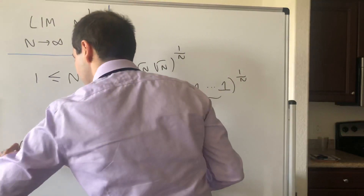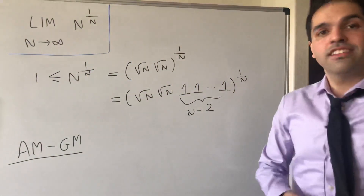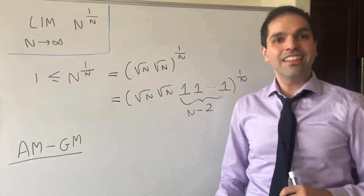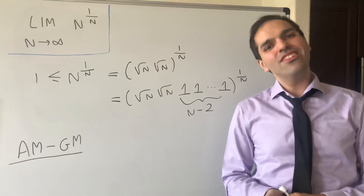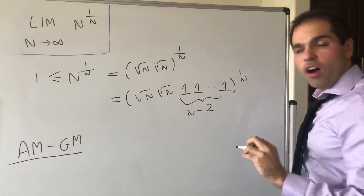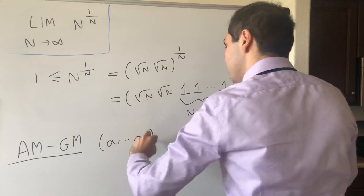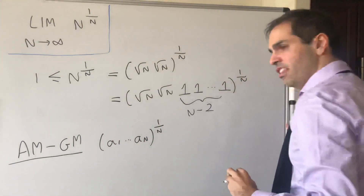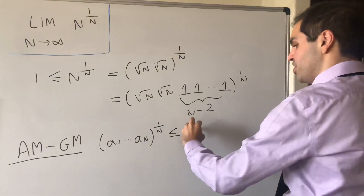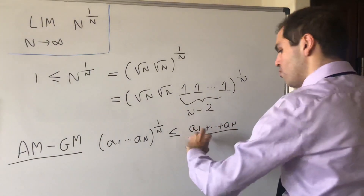So AM-GM — also known as Inégalité Arithmetico-Géométrique — it says the following: if you have the product of n positive terms a1 through an and you take the nth root of this, then this is always less than or equal to the average of those n terms, so (a1 + ... + an) over n.